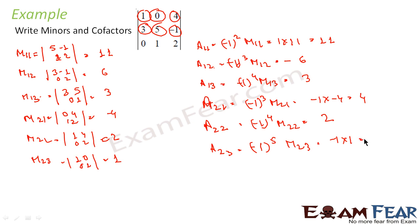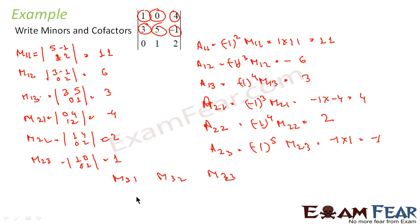So those are the values of the cofactors and the values of the minors. I have not done M31, M32, and M33 — similarly A31, A32, and A33 you can do in the similar fashion.